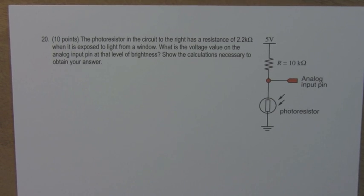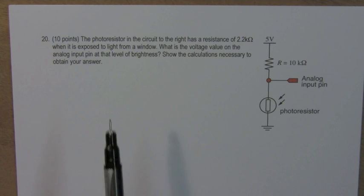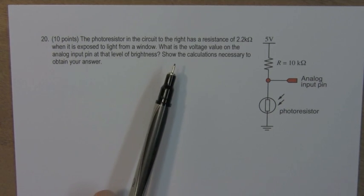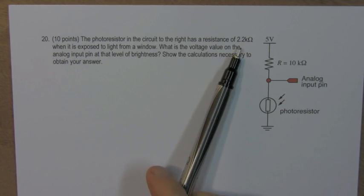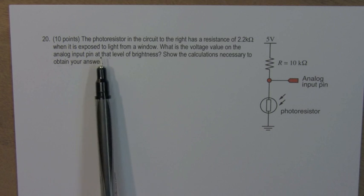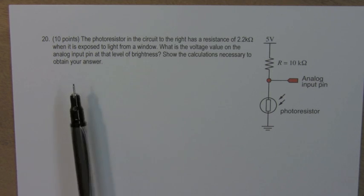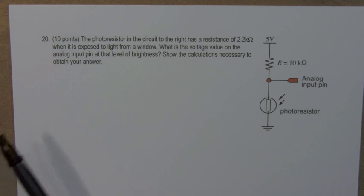Number 20, 10 points. The photoresistor in the circuit to the right has a resistance of 2.2 kiloohms when it is exposed to light from a window. What is the voltage value on the analog input pin for that level of brightness? Show the calculations.